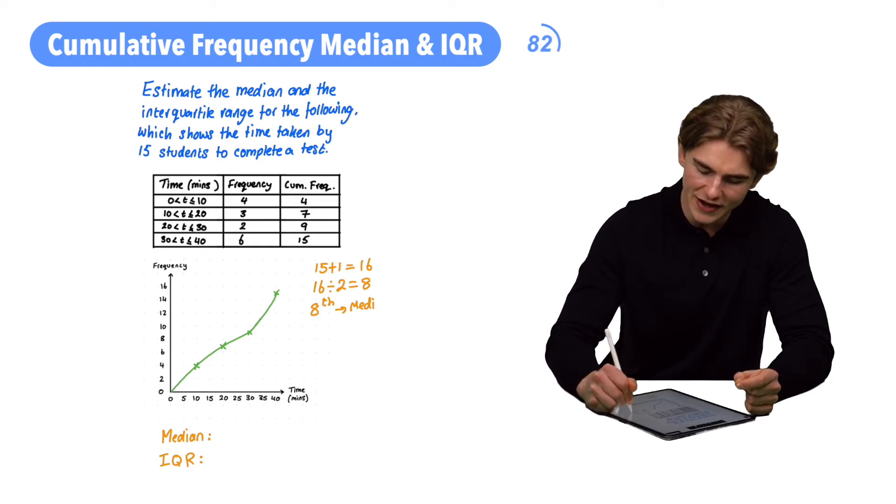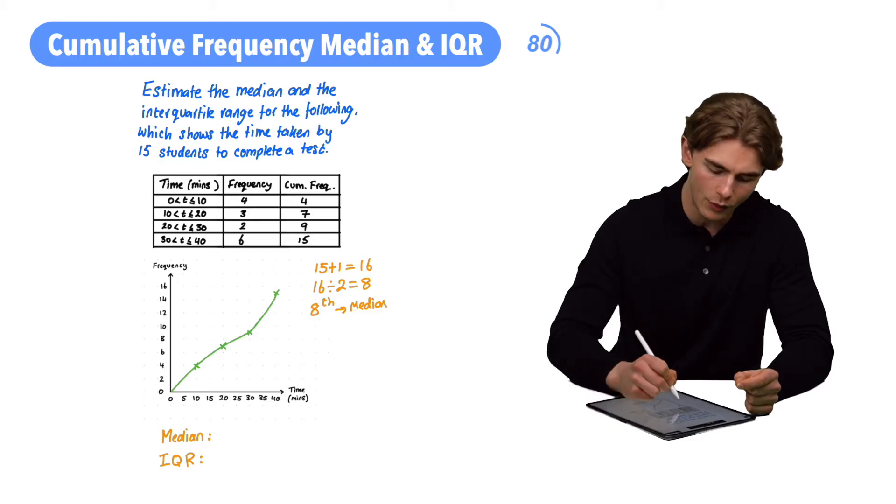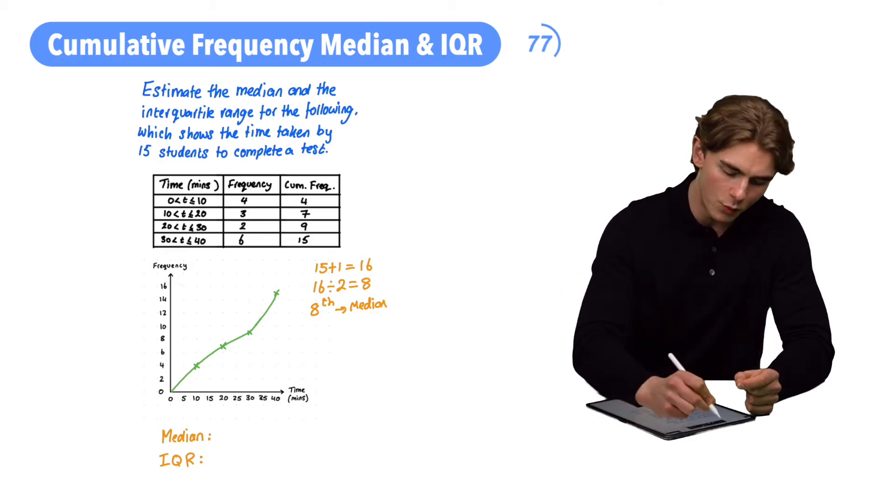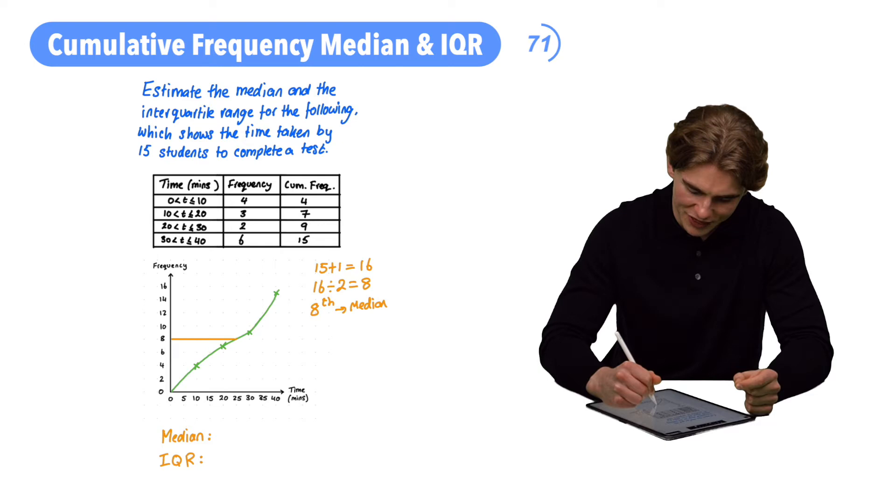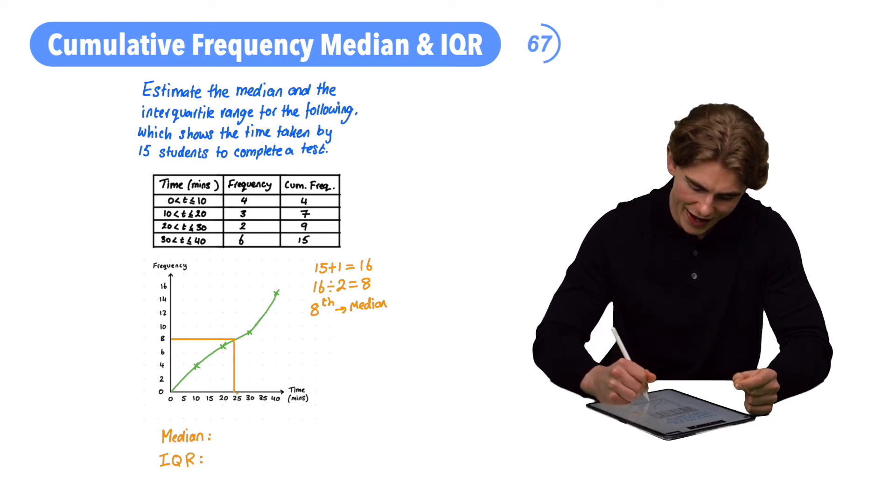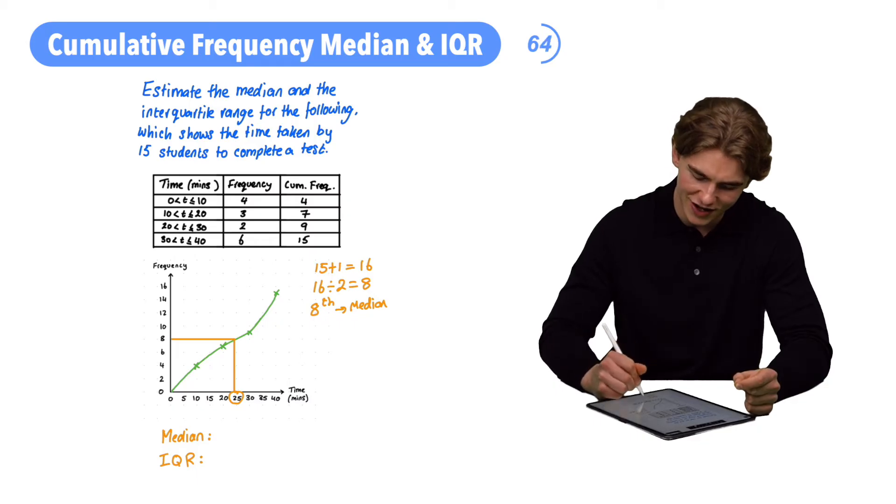So how are we going to find our 8th value? We're going to come over to our y-axis which is our cumulative frequency and we're going to read across from our 8th. We're going to draw a line over just like this. Make sure you use a ruler and then we're going to draw down from where that meets our line and we can see that it meets the line at a time of 25 and that suggests that our median is going to be 25 minutes.